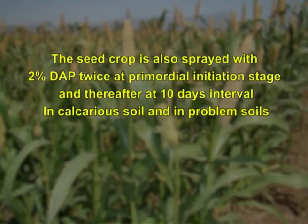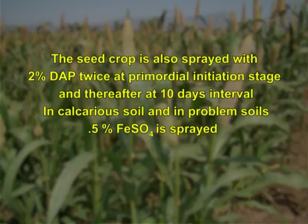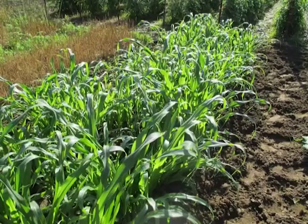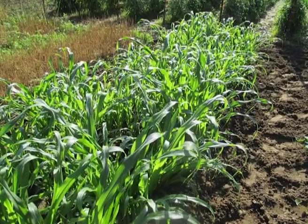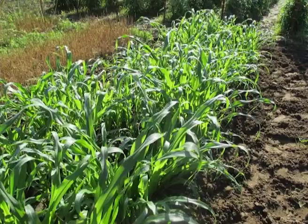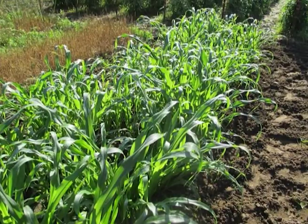In calcareous and problem soils, 0.5% ferrous sulphate is sprayed thrice at 10-day intervals from primordial initiation stage. The seed crop should be irrigated once a week for enhanced seed set and formation of bold grains. Critical stages of irrigation are primordial initiation, vegetative, milky, and maturation stages. If irrigation is withheld at these stages, seed set will be poor and seed size will be reduced. Application of pre-emergence herbicides controls weed growth up to 20 to 25 days after sowing. One hand weeding at the time of primordial initiation keeps the seed field weed-free. Weeding after boot-leaf stage is not economical.